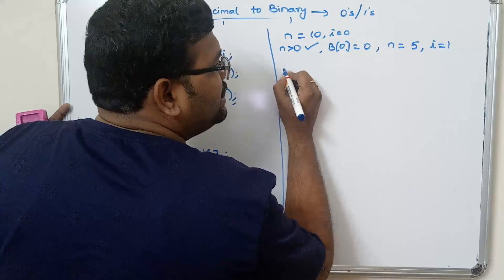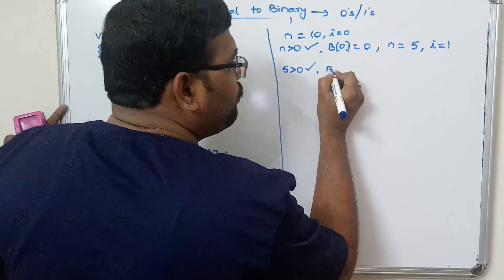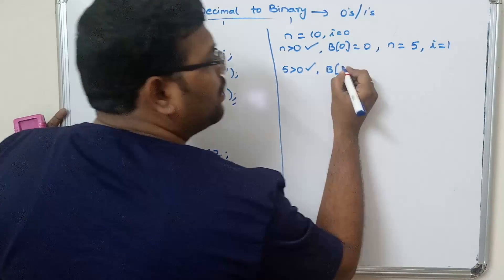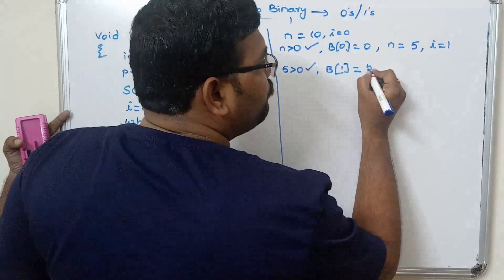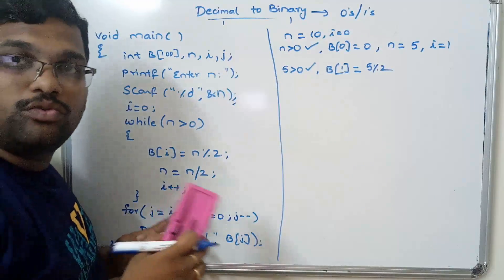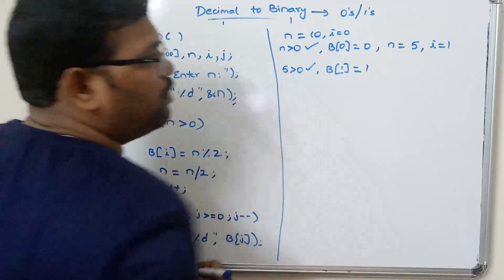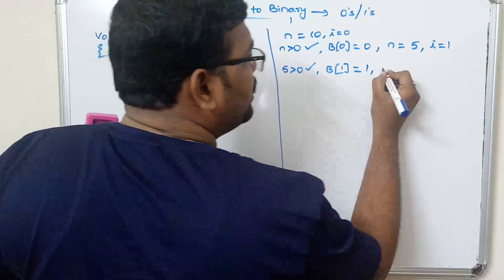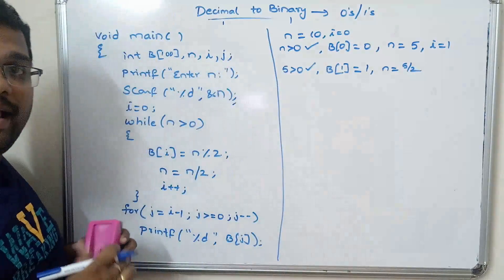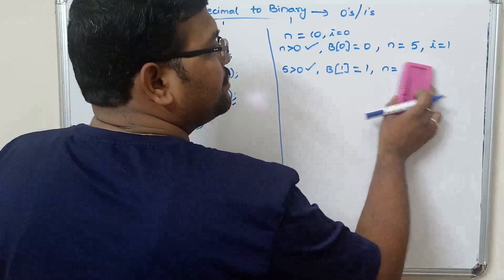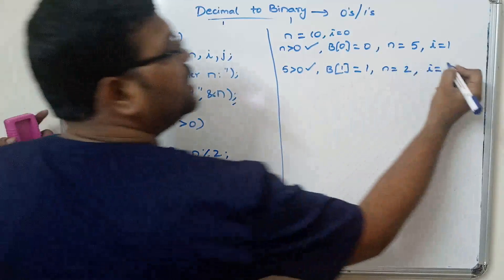Second iteration: n = 5, which is greater than 0 — true. b[1] = 5 mod 2 = 1 (since 2 twos are 4, remainder is 1). Then n = 5 / 2 = 2 (integer division), and i++ makes i = 2.